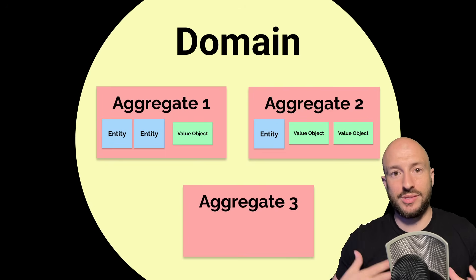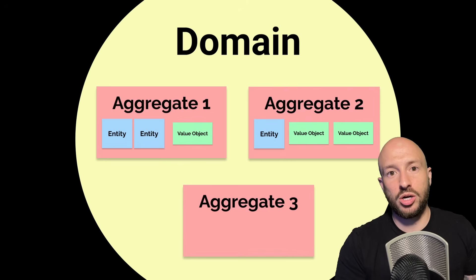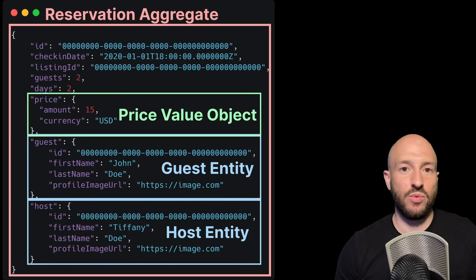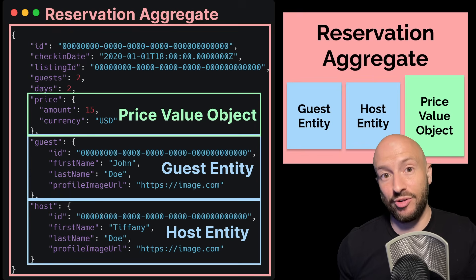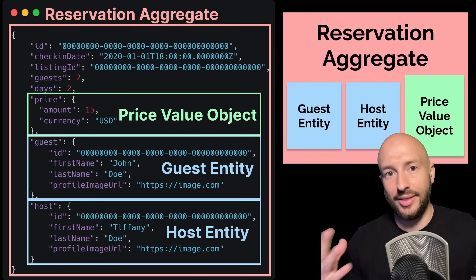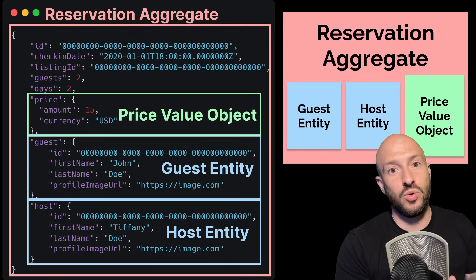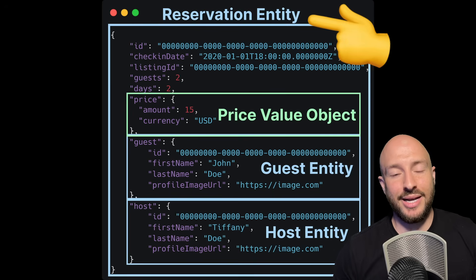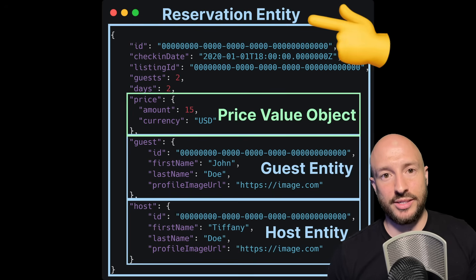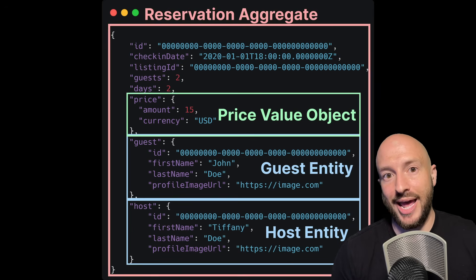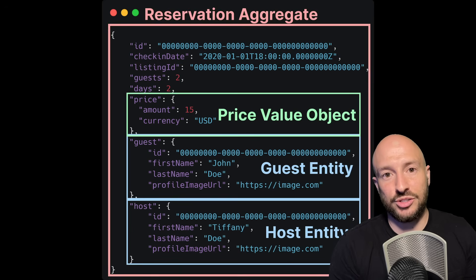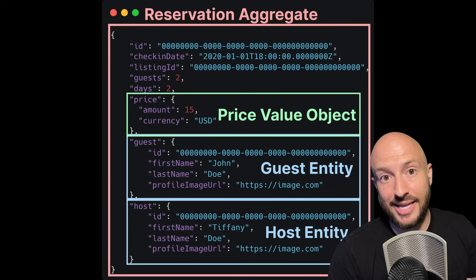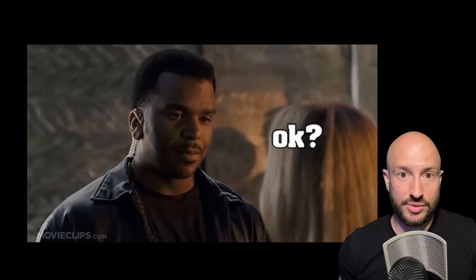One or more domain objects that always need to be consistent as a whole are called an aggregate. In Airbnb, we might have the reservation aggregate, which is composed of the listing being reserved, the host, and the guest. The entity that is the root of the aggregate is referred to as the aggregate root, and it's its responsibility to enforce invariants. In our case, the reservation aggregate must ensure the aggregate is always in a valid state — for example, that there aren't more guests booked than the listing allows.